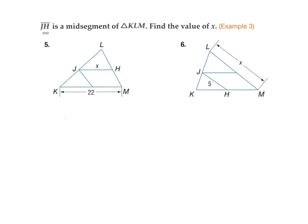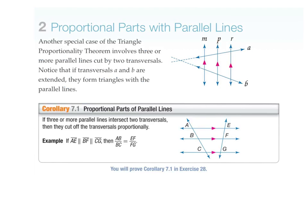So here's question number 5, JH. JH is the mid-segment. So this guy is the mid-segment to that. You know that the mid-segment needs to be half of the full length. So it's just basically 22 divided by 2, which will give you a distance of 11. Simple, easy math.